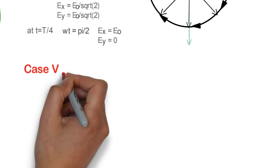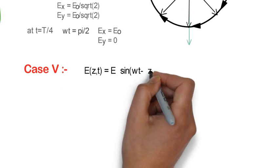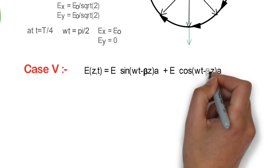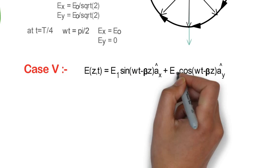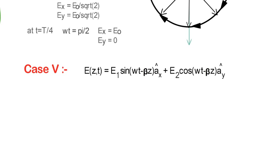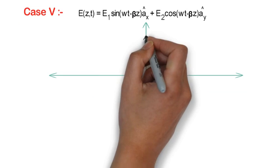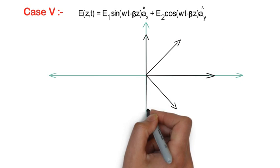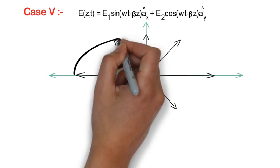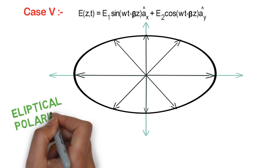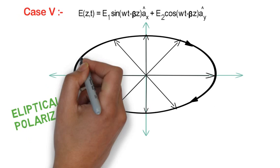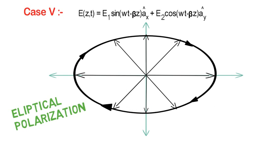In case 5, let's say we have the same case as previous one. Only difference is that the amplitude of both the components are different. So here we will get different magnitudes at various time instances like shown in the figure. And we will have elliptical polarization. And we can find the sense of rotation same as we found it for circular polarization.